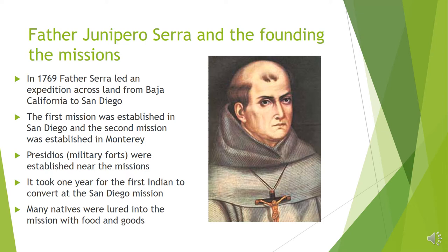Father Junipero Serra led an expedition in 1769 overland from Baja California up to San Diego, where the first mission was established. The second mission followed in Monterey. Presidios — military forts — were established near missions initially to protect them and their inhabitants, and later to protect the pueblos and towns that developed.